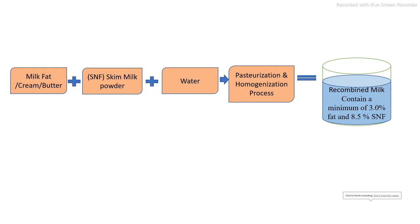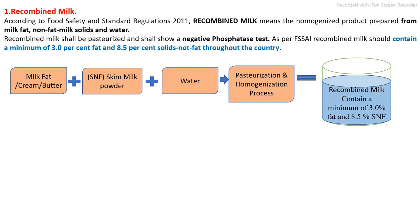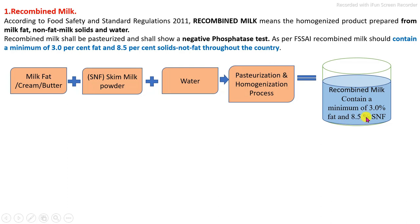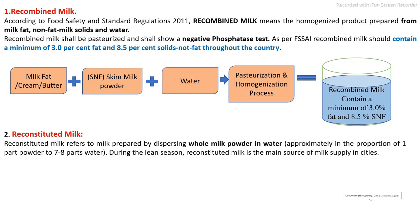What is meant by recombined milk? As per food safety standards of India, recombined milk means milk which is prepared by mixing of milk fat sources with non-fat milk solids, with addition of water and proper mixing of these constituents, and after that pasteurization and homogenization process is carried out. The proportion of fat and SNF is maintained to meet the minimum three percent fat and 8.5 percent SNF in the final recombined milk.